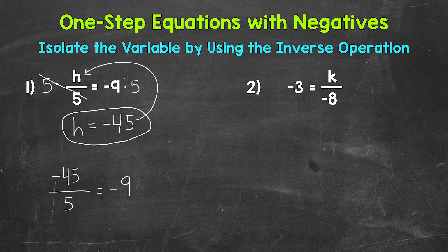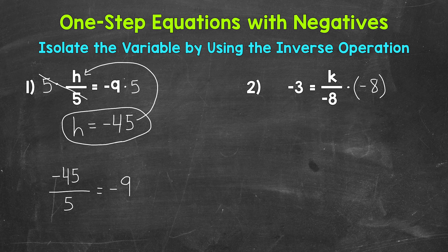Let's move on to number 2, where we have negative 3 equals k divided by negative 8. We need to isolate the variable k. Since k is being divided by negative 8, we need to undo that division by using the inverse operation — the inverse of division is multiplication. Let's multiply the right side by negative 8. Whatever we do to one side we must do to the other, so let's multiply the left side by negative 8 as well. On the right side, we are dividing by negative 8 and multiplying by negative 8, so these negative 8s cancel each other out.